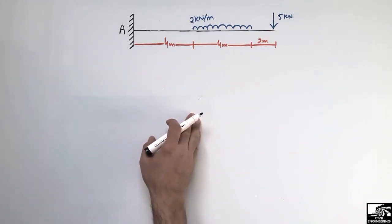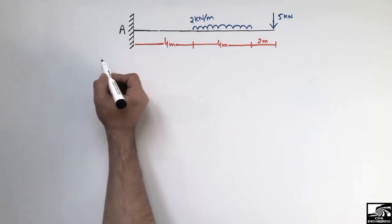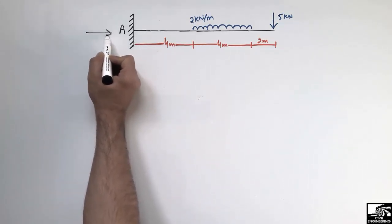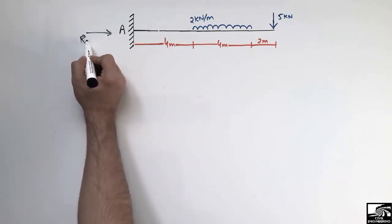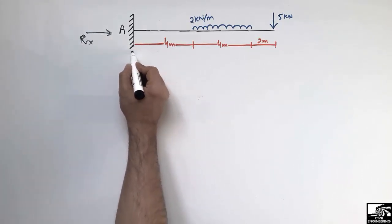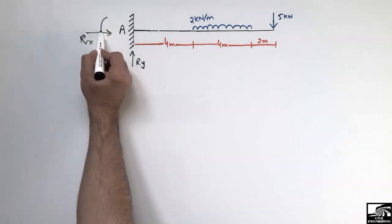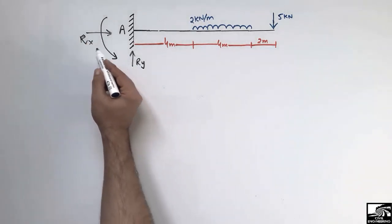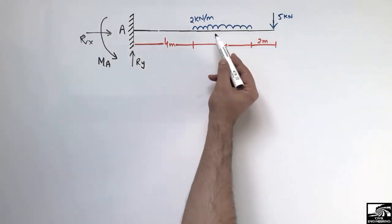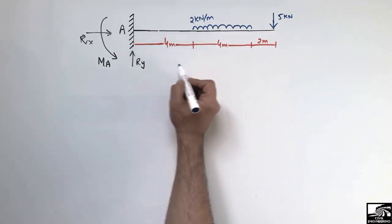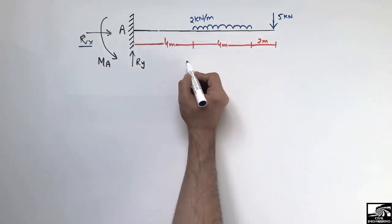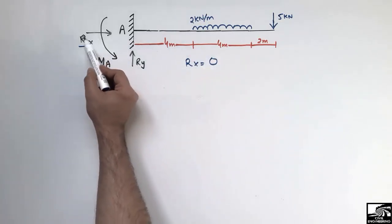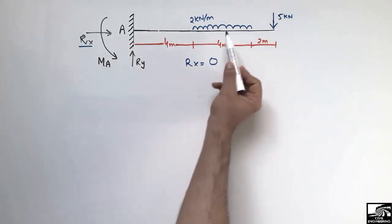We have to find the support reactions first, then draw the shear force and bending moment diagram. Point A has a fixed support, which can resist horizontal forces Rx, vertical forces Ry, and moment MA. Since there is no horizontal force acting on this beam, Rx is equal to zero.